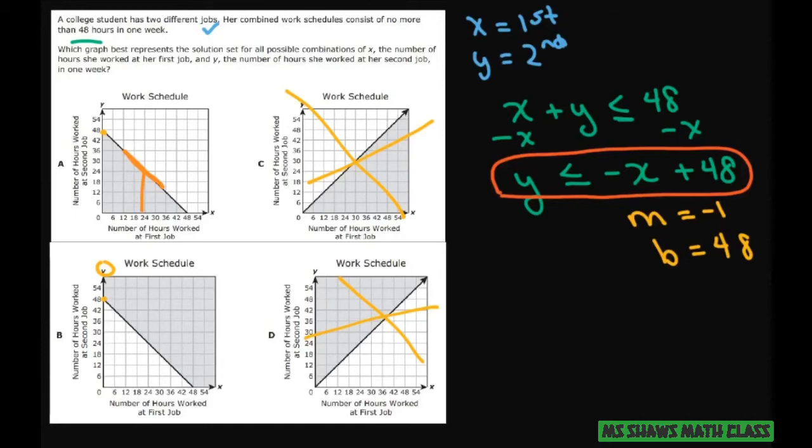If it says greater than, you draw up. If you draw down, this would be your solution set. And you just shade over that where you drew down.